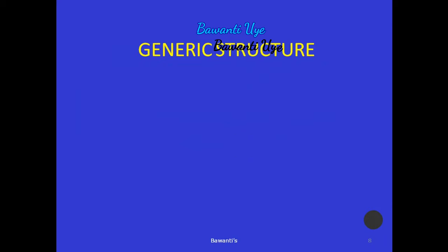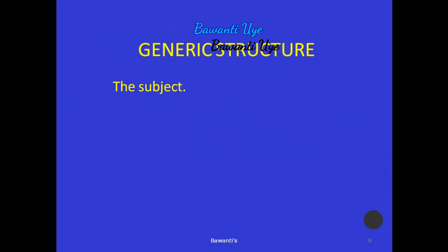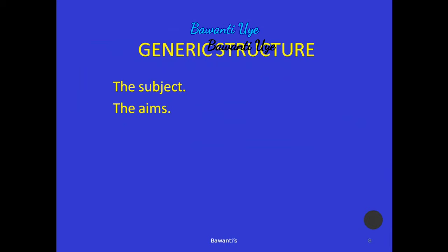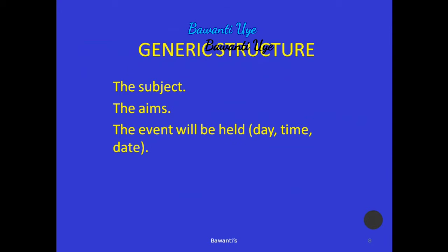Generic structure: pertama, harus ada subjeknya. Yang kedua, the aim — harus ada tujuannya. The event will be held — jadi harus ada ketentuannya. Kapan, waktu, dan tanggalnya: day, time, and date.